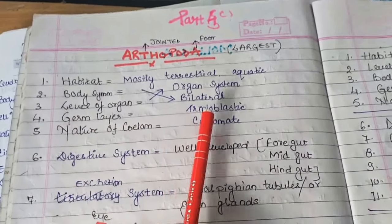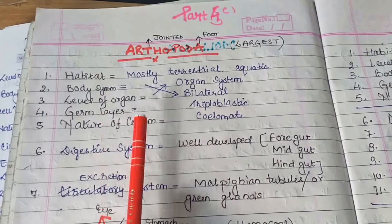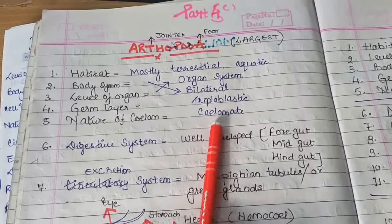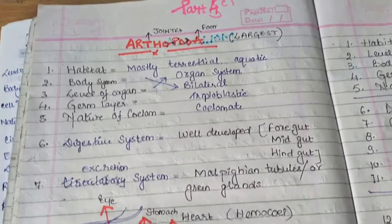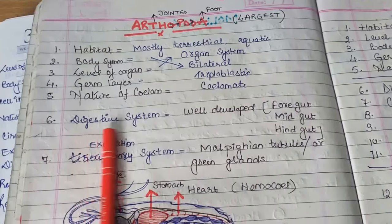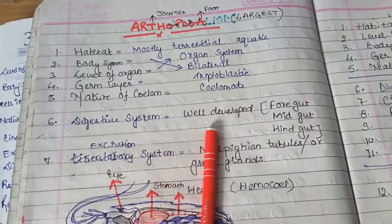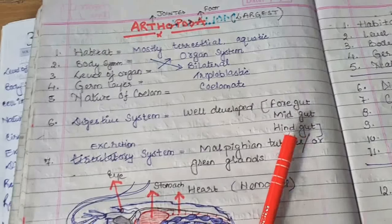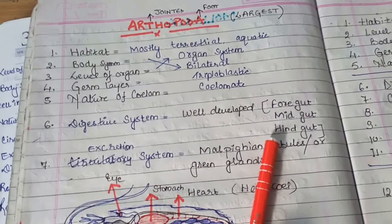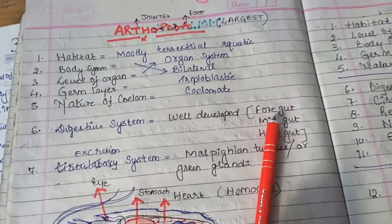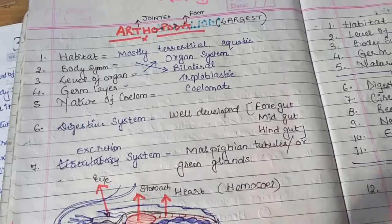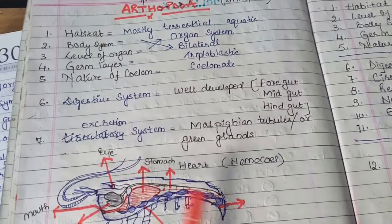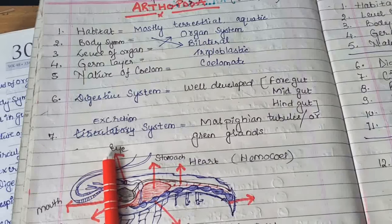Germ layer: they are triploblastic. Nature of coelom: they are true coelomate organisms, that is, eucoelomates. Coming to the digestive system, the digestive system in these organisms is well developed. Their gut region is divided into three parts: foregut, midgut, and hindgut — each responsible for performing different digestive functions.